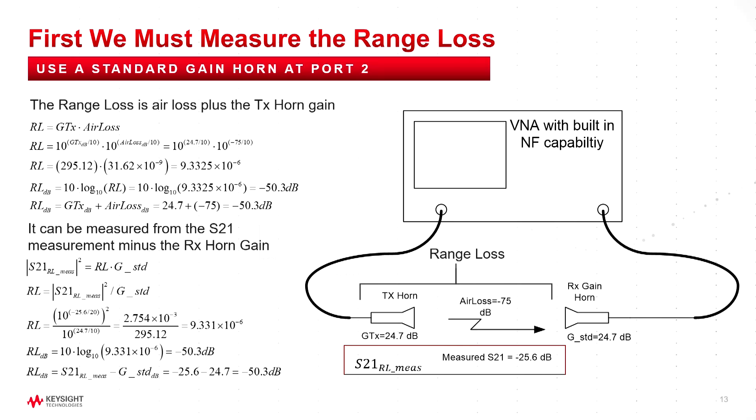So the measurement of range loss is really from the face of the TX horn to the face, sorry, from the input of the transmitter horn, this is a calibration point of the network analyzer, to the face of the RX horn. We call that the range loss. Now the horn itself has gain. And so we have to compensate the range loss for the standard gain. So the typical thing we do is we measure the S21 of the whole thing, we subtract off the standard gain horn, and that gives us the range loss in dBs.